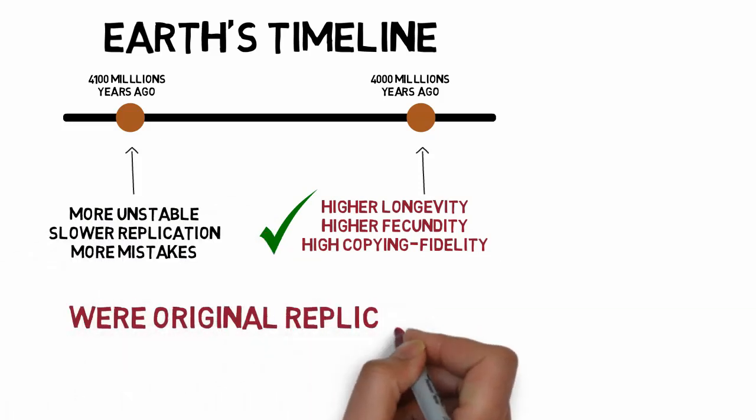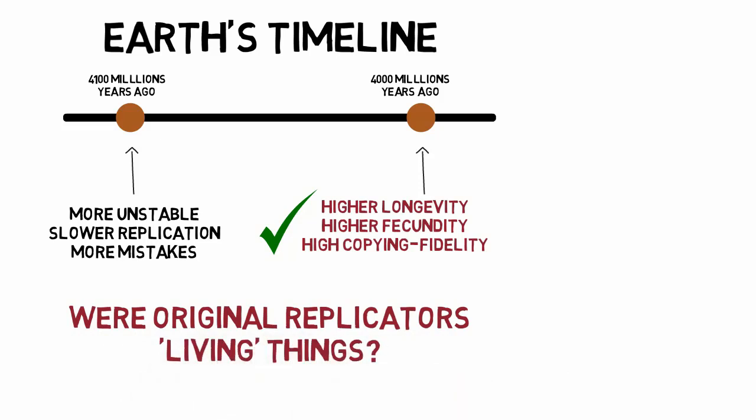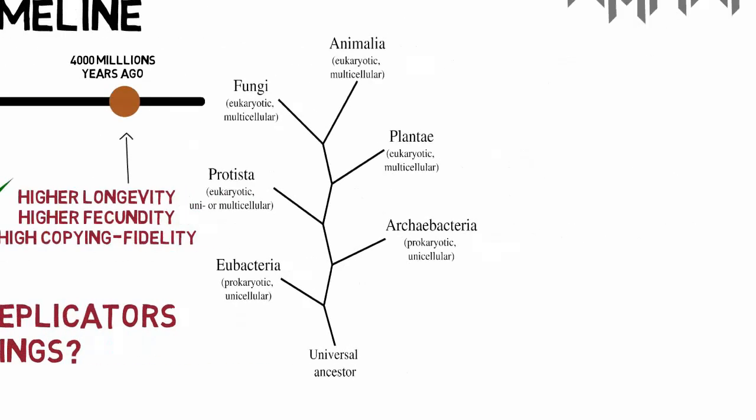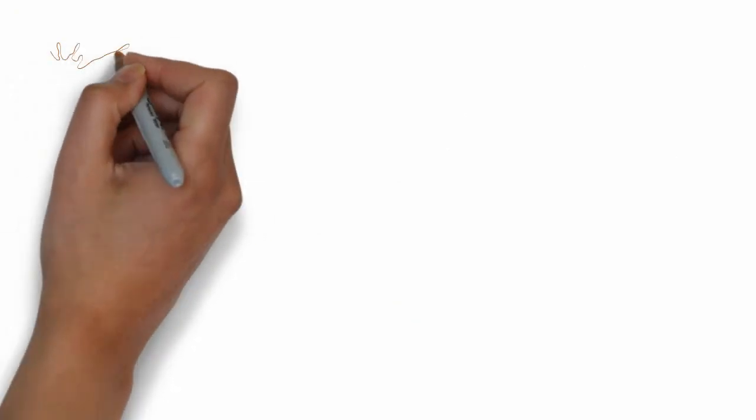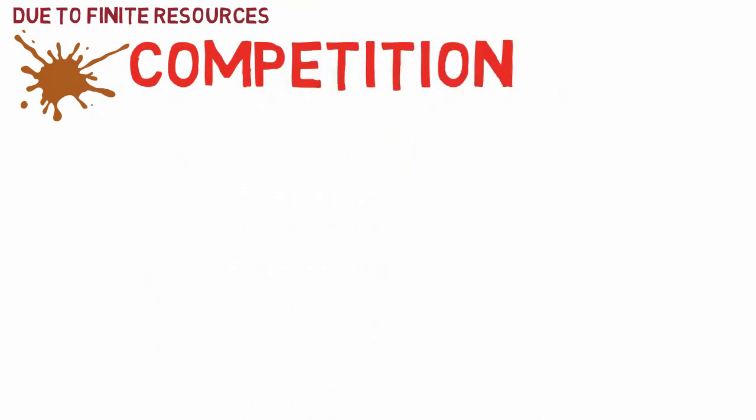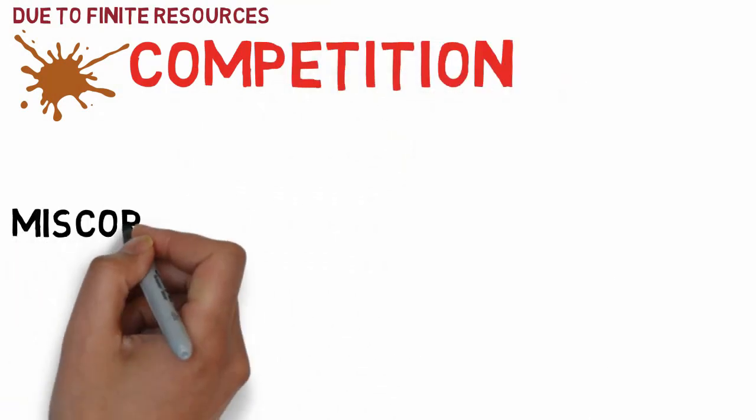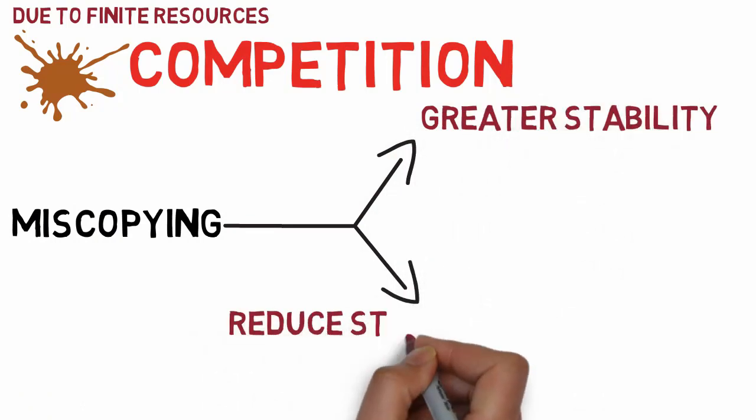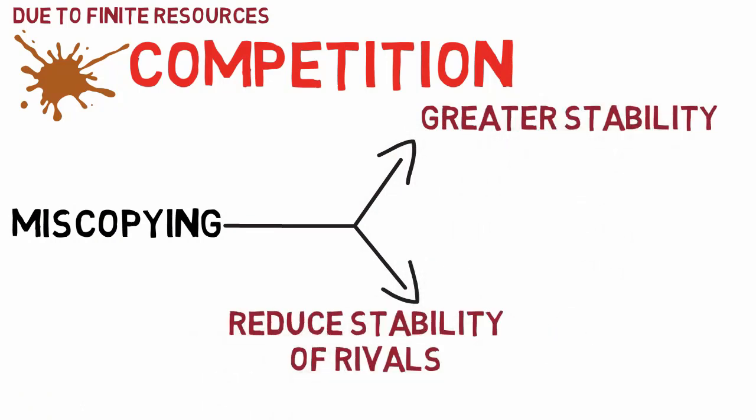Whether we call these original replicator molecules living things, Dawkins warns that words are only tools for our use and whether they were living or not, we can assume they were the ancestors of life. As the primeval soup cannot infinitely produce replicator molecules due to finite resources, competition becomes an important factor in survival. Miscopying that created higher or greater stability or allowed a way to reduce the stability of rivals was automatically preserved and multiplied.